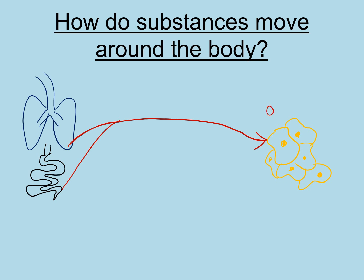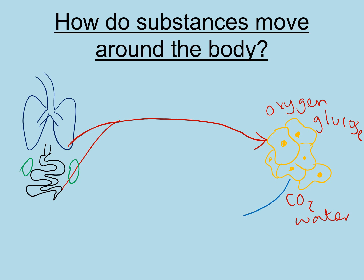When the cells respire, they take the oxygen and the glucose. They use those, and also make waste products they want the blood to take away again. The waste products they make are carbon dioxide and water. Here's a little pair of kidneys — the blood is now deoxygenated. When blood is deoxygenated, it doesn't actually turn blue — it turns a browny-red colour rather than a bright red. But in textbooks we draw it as blue so you can tell the difference. The blood is now moving towards the kidneys, carrying carbon dioxide and water. The water will be removed by the kidneys and the carbon dioxide will be removed by the lungs. So how do substances move around the body? By the blood.